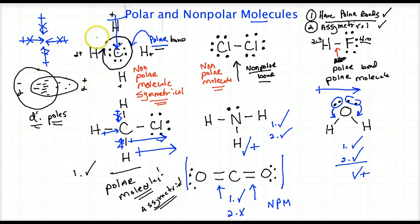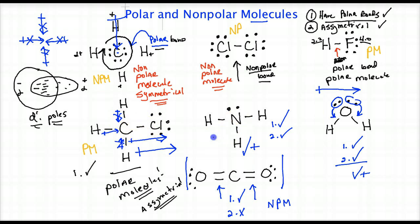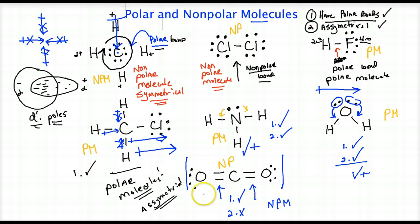Let's review. CH4 is a nonpolar molecule even though it has polar bonds, because it's symmetrical. H2 is a nonpolar molecule because it doesn't have a polar bond. HF is a polar molecule — it has a polar bond and is not symmetrical. The asymmetrical molecule with mixed substituents is polar: it has polar bonds and is asymmetrical. NH3 is a polar molecule with polar bonds and asymmetry. H2O is polar — the lone pair bends it downward making it asymmetrical. And CO2 is a nonpolar molecule because it is symmetrical. These are the most common types you'll see at the Regents level.